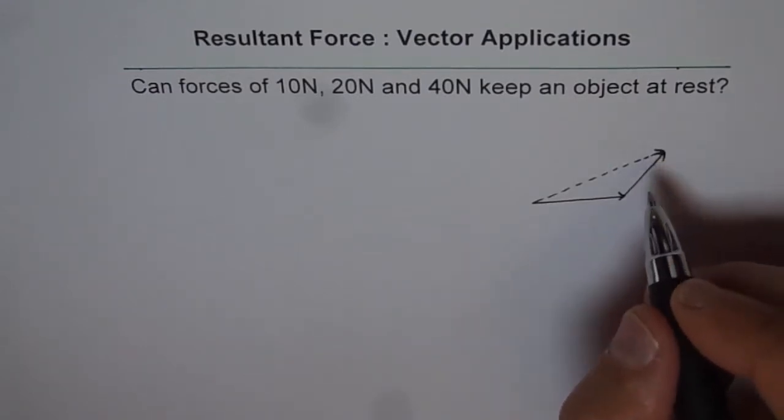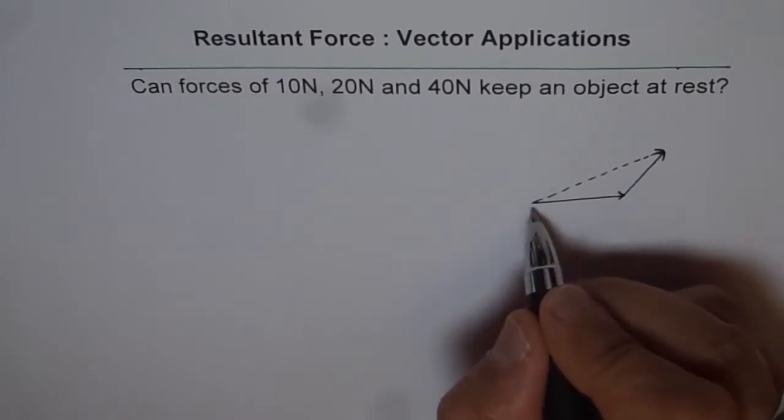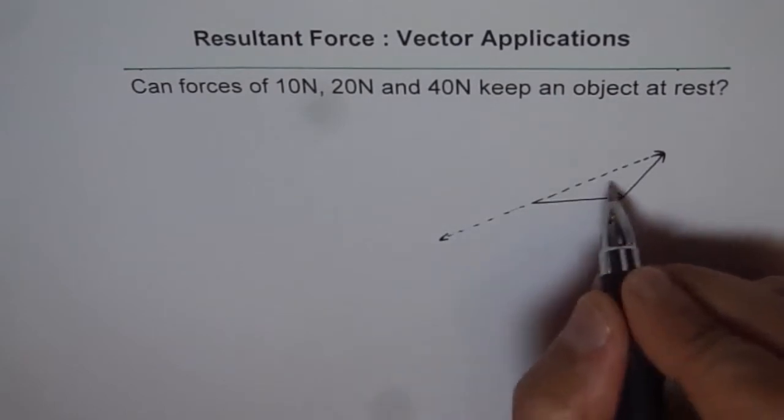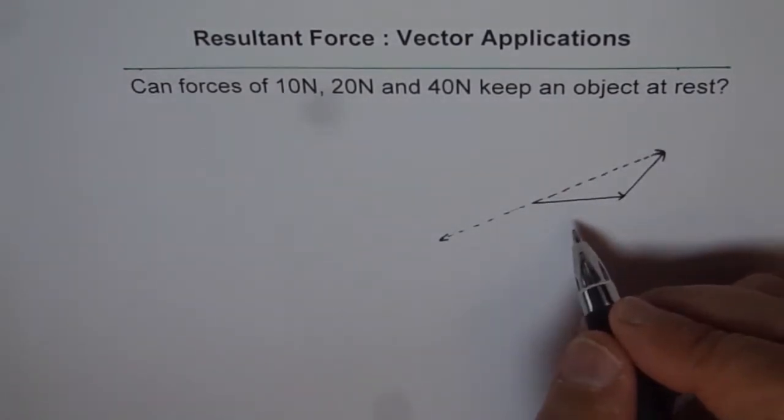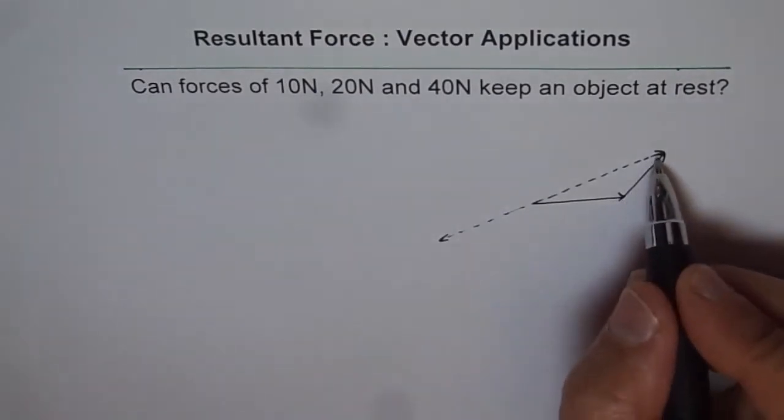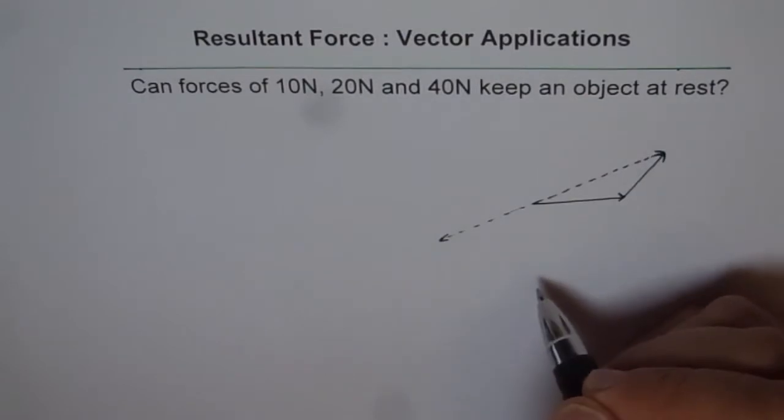Now if the third force is equal and opposite to this resultant force, then only we get a state of equilibrium. Therefore, the third force should actually form a triangle with it. You see that? Only then we will get equilibrium.